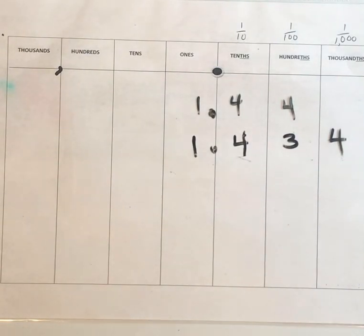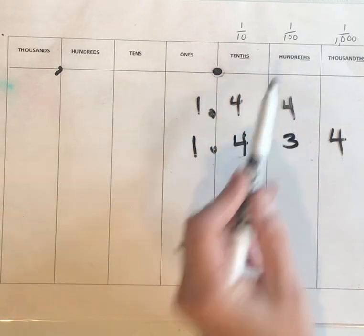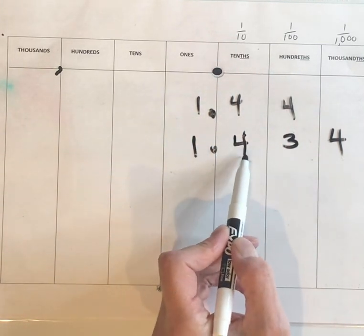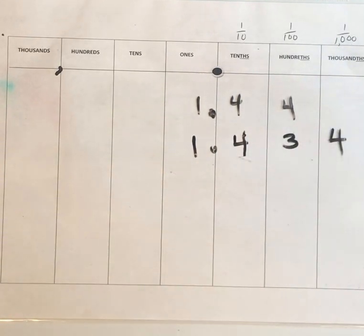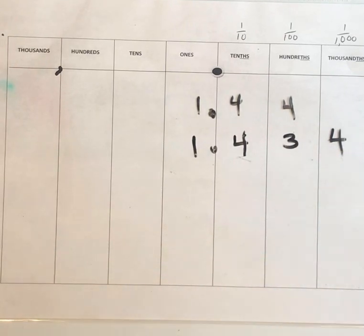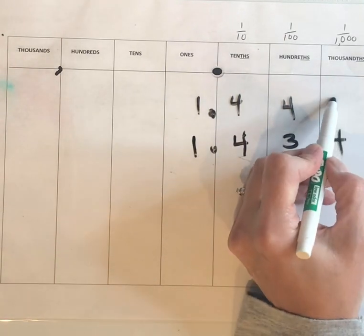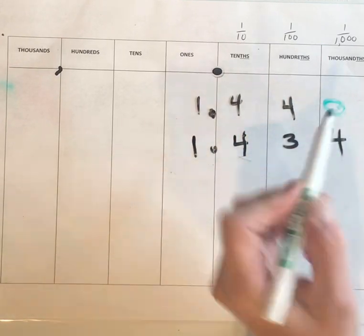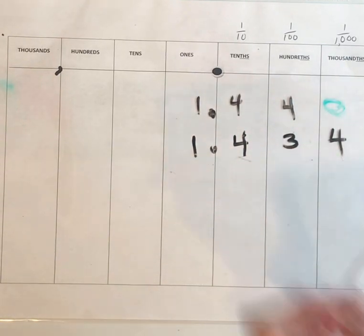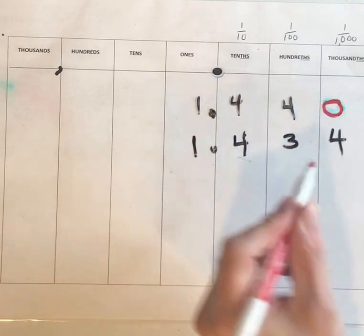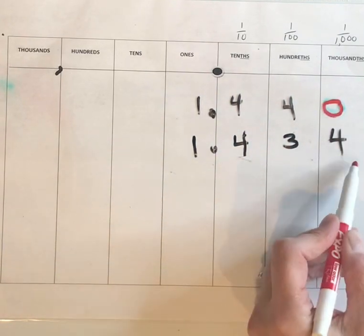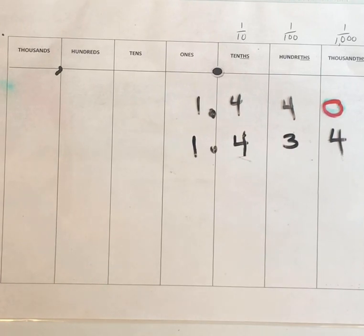Let's think money to compare these two numbers: 1 and 44 hundredths, and 1 and 434 thousandths. This could be a little confusing because we have a number in the thousandths place for one but not the other. We might be inclined to think that if a number has more digits then it has to be bigger, but let's try the strategy of thinking money.